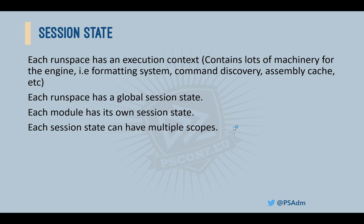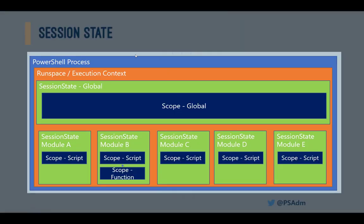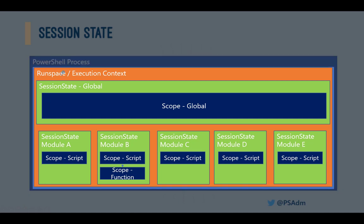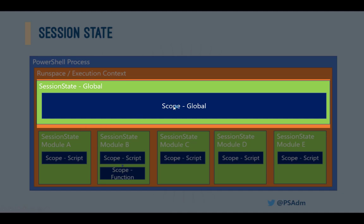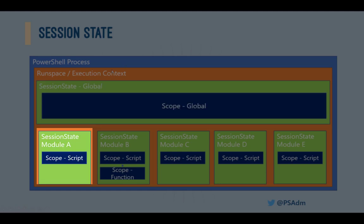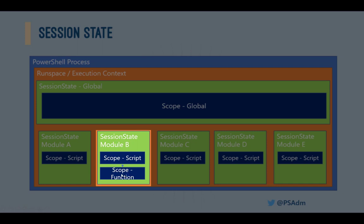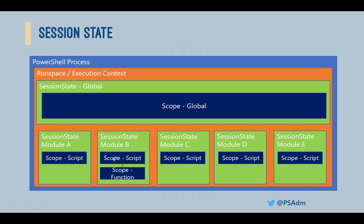Let's look at a diagram. We have the PowerShell process, and within it a runspace — which could simply be opening up the terminal. Within this runspace is a global session state, and here is the global scope. Every time you import a module, it creates a new session state attached to that module, and each of these session states has its own scope. The uppermost scope within the module session state is called the script scope. If we look at module B, which is currently invoking a function, the function scope is a child of the script scope within that session state. So if a variable can't be found in the function scope, it looks in the script scope, then up to the global scope.